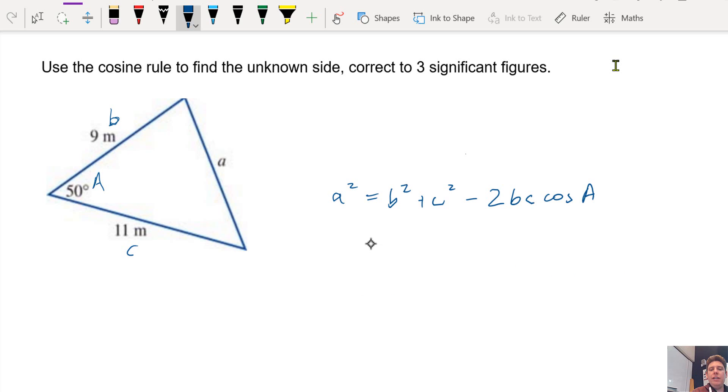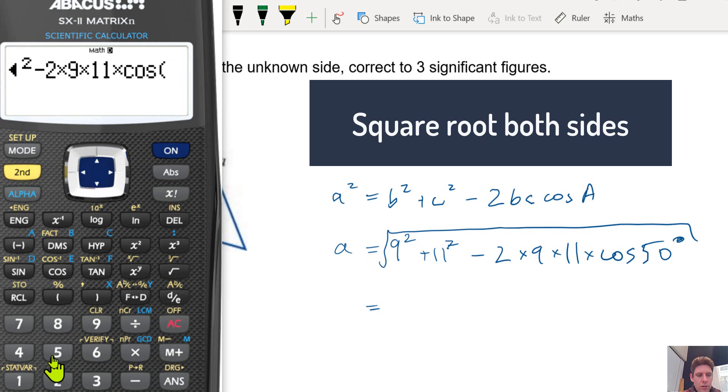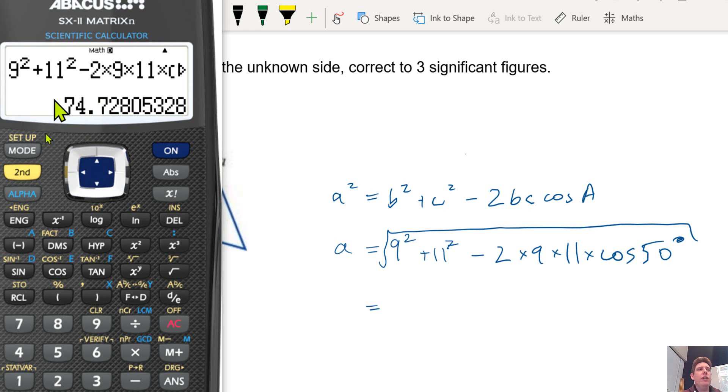Okay, so you substitute everything in. And this is A squared, so how do we need to get rid of that two? So that's the number inside the square root. Square root the answer.